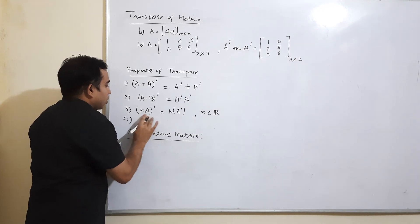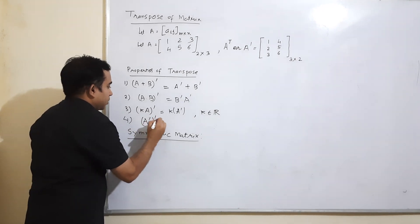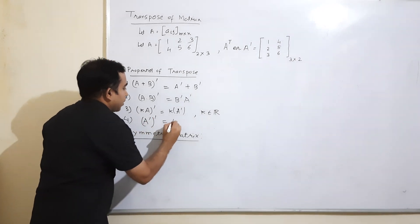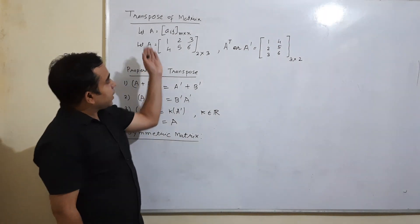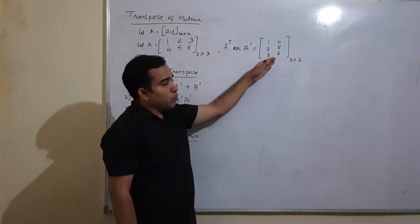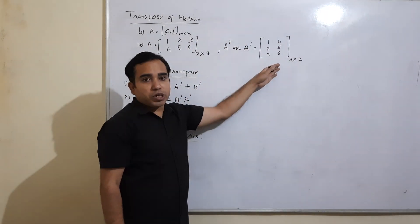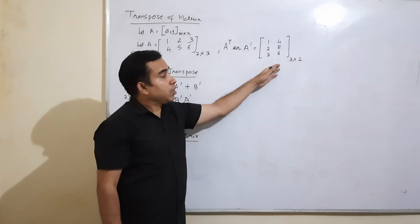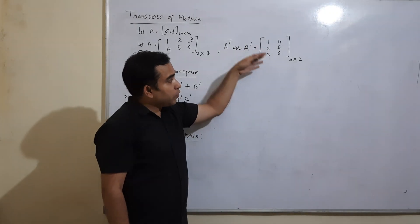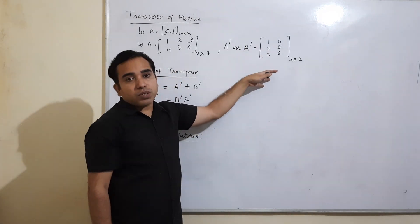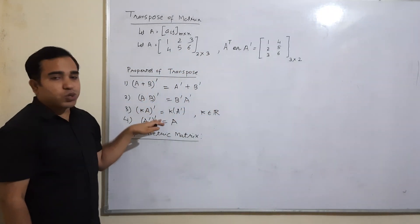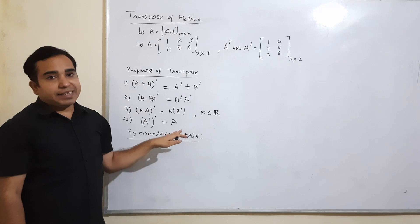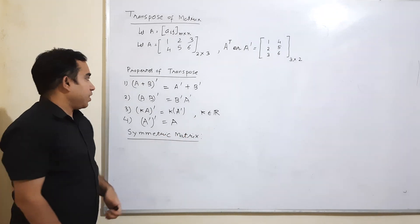One more property: the transpose of a transpose is the same as the original matrix, i.e., (Aᵀ)ᵀ = A. Once you take the transpose, rows and columns are mutually interchanged; if you take the transpose again, everything returns to its original place.